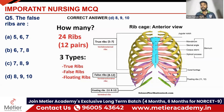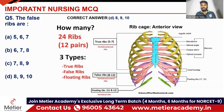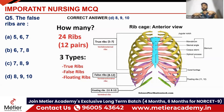True ribs are directly connected to the sternum with vertebrosternal cartilage. False ribs are connected to the sternum through vertebrochondral cartilage via other ribs — they do not directly touch the sternum, which is why they are called false ribs. Ribs 11 and 12 are floating ribs, which are not connected to the sternum at all, which is why they are called floating ribs.